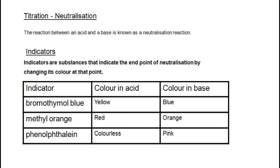Looking at titrations as neutralization reactions, we know that when an acid reacts with a base, a neutralization reaction takes place. When we have titrations occurring, we need indicators to show us when neutralization has taken place. Indicators are substances that indicate the endpoint of neutralization by changing color at that point. Common indicators that we use are bromothymol blue, methyl orange, and phenolphthalein.